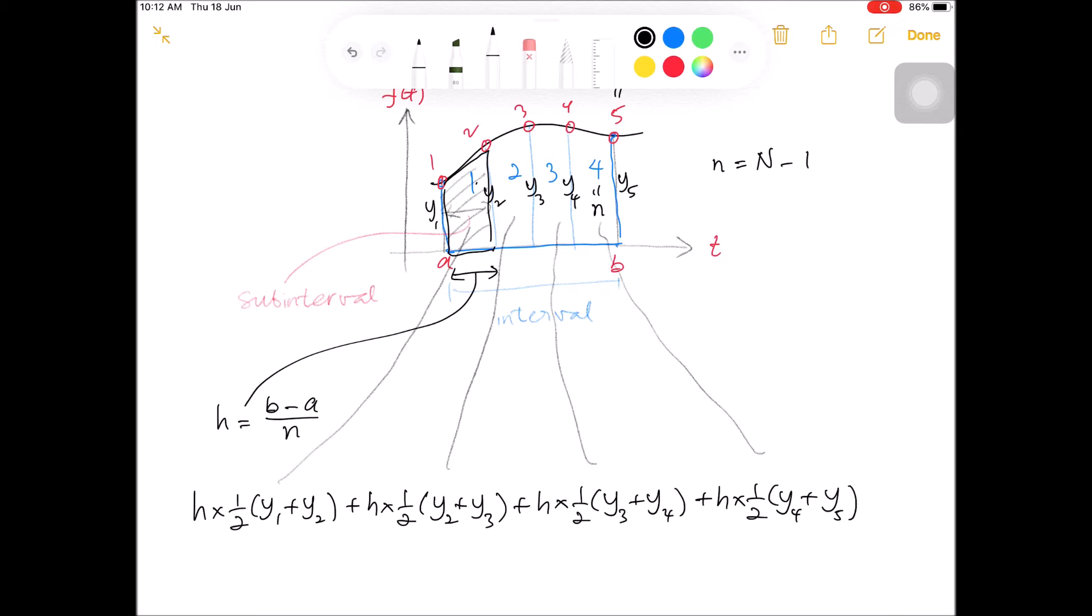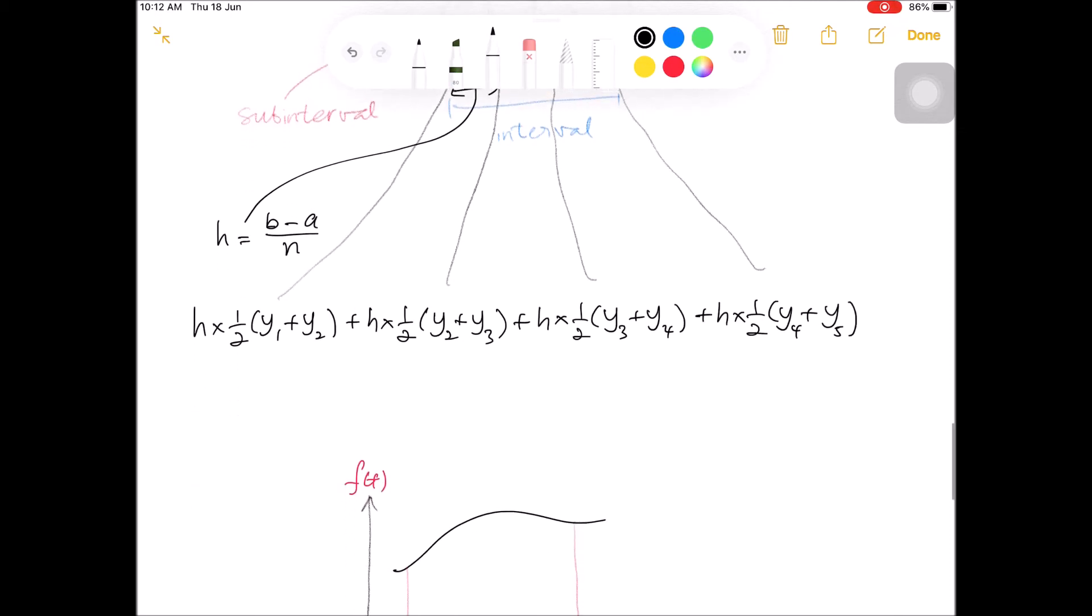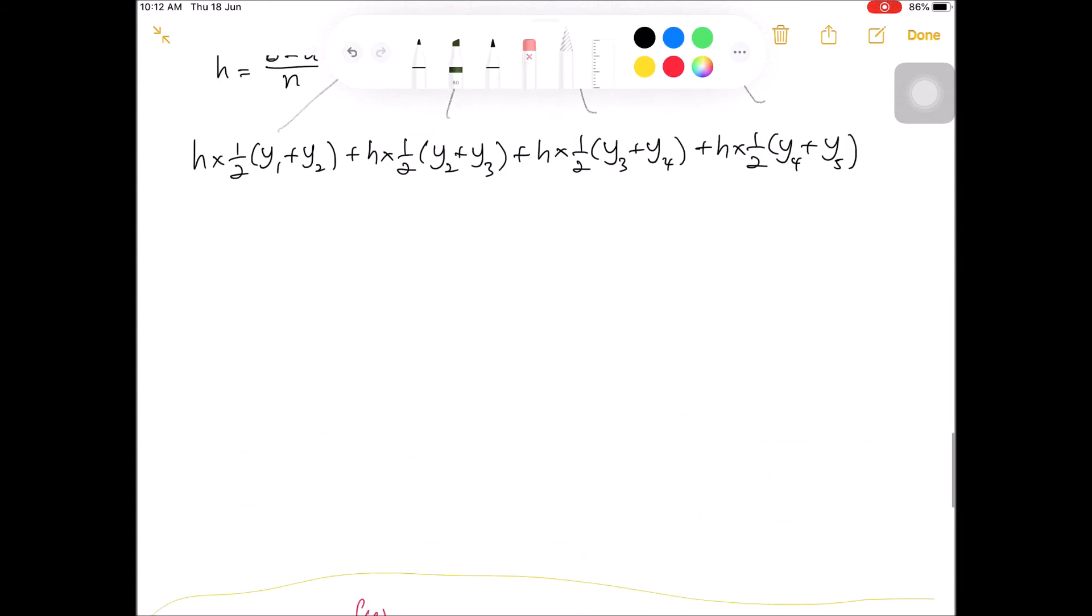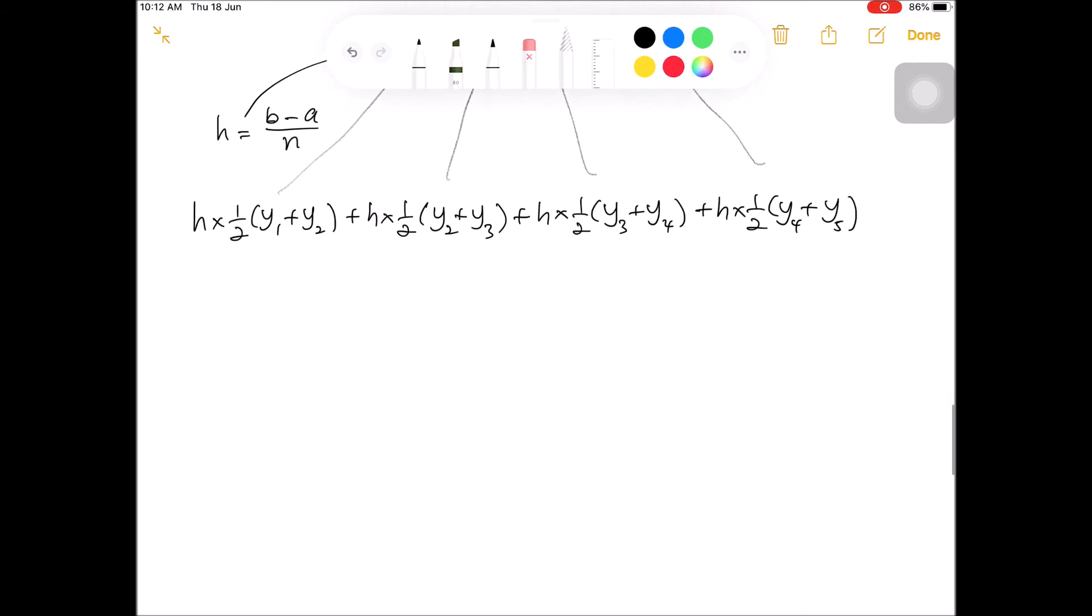If you notice, Y2, Y3, and Y4 appear twice in the expression. So we can factorize them to be as H over 2, Y1 plus 2 times Y2 plus Y3 plus Y4, plus Y5.